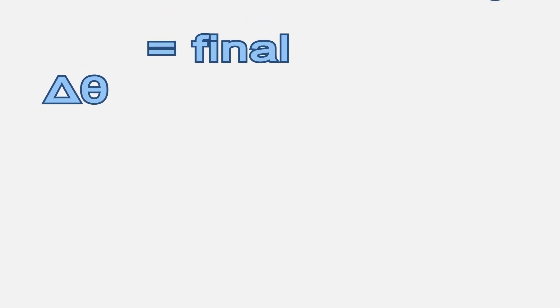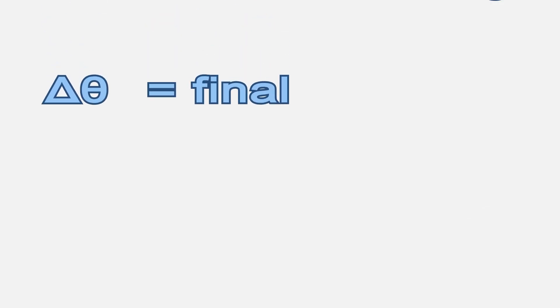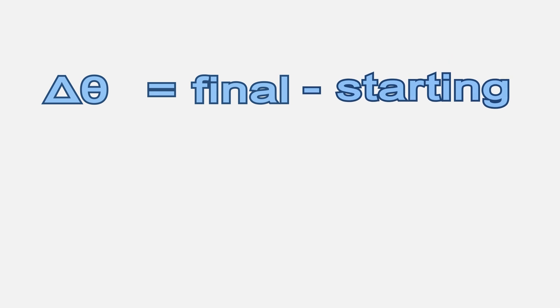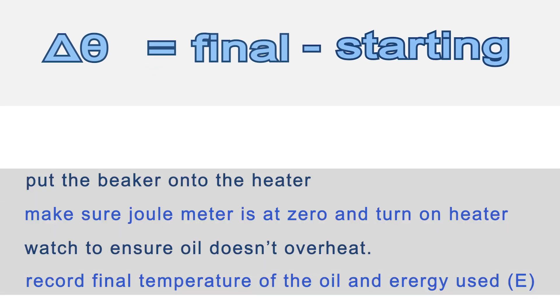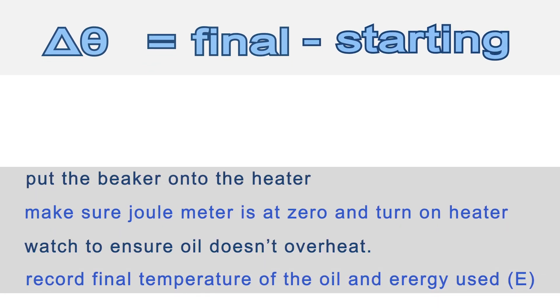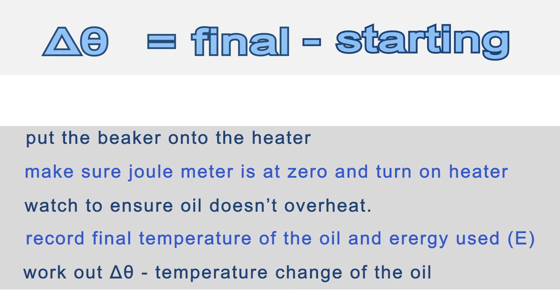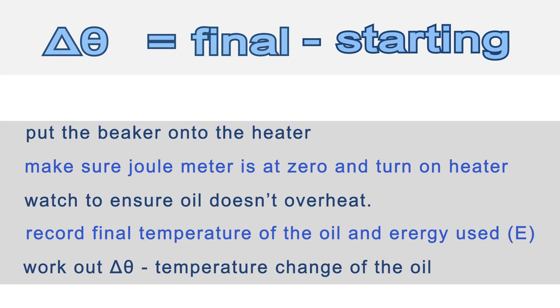We now need to work out the change in temperature, which is easily done by taking the final temperature and subtracting the initial temperature. Write down something like: work out delta theta, the temperature change of the oil.